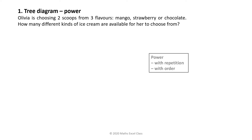Let's look at an example. Olivia is choosing two scoops from three flavours: mango, strawberry, or chocolate. How many different kinds of ice cream are available for her to choose from? No condition is specified, so you can choose whatever you like.